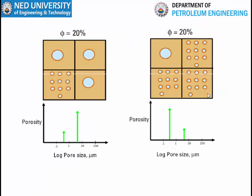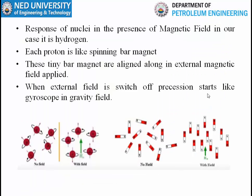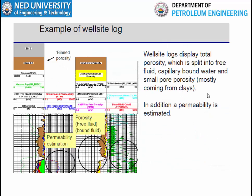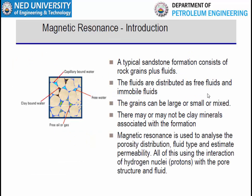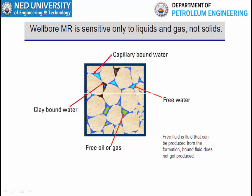This is the NMR log — a very useful log when available. In this log we measure the decay signal and by observing it we can determine free fluids and bound fluids. By knowing the free and bound fluids, we know the pore size distribution of a given rock. By knowing the pore size distribution, we estimate permeability. This tool provides us lithology-free porosity and permeability. That's all from my side for this second lecture of week number 10. Thank you.